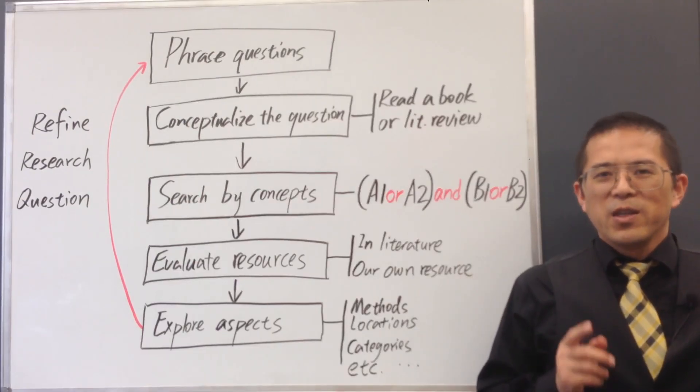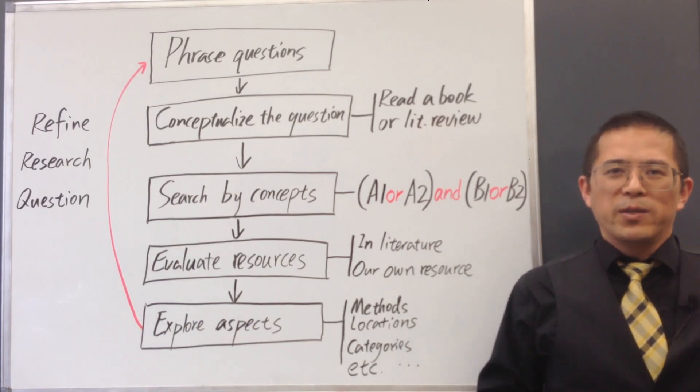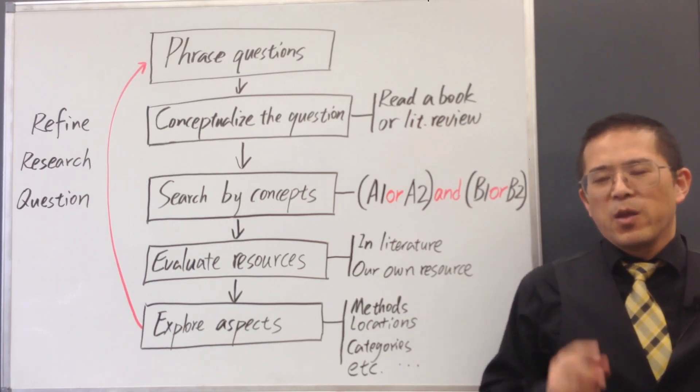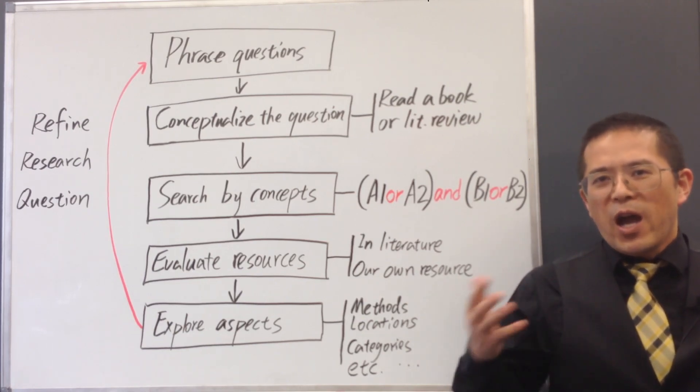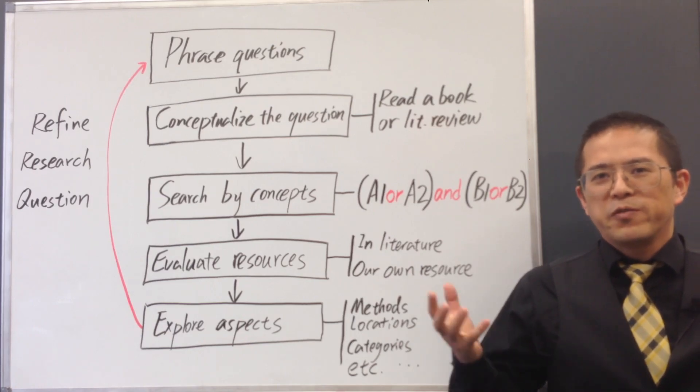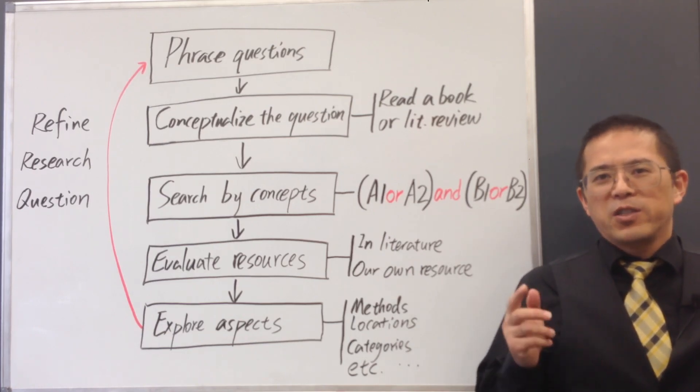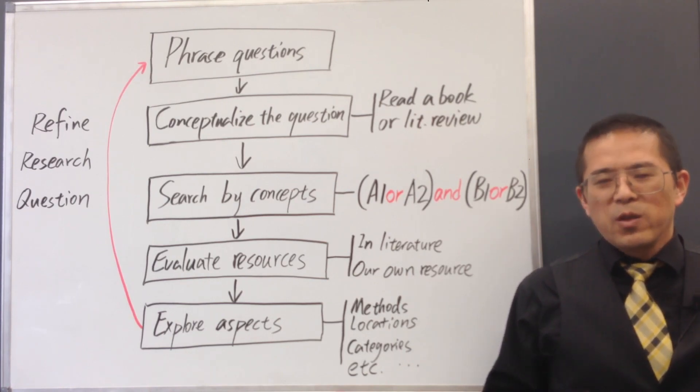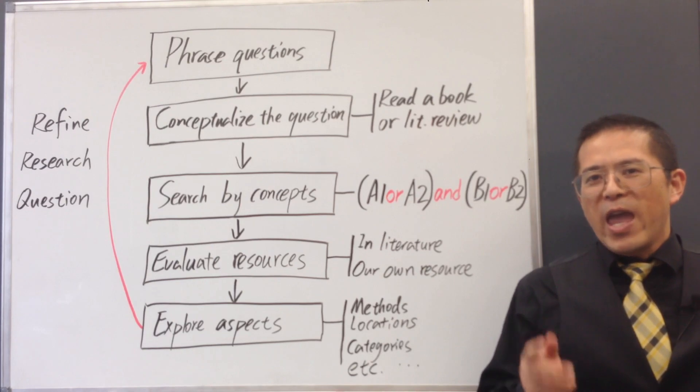The second reason is that if we choose a broader topic, we will have more competition from other researchers. It is more likely we may either repeat other people's efforts or contradict with other people's findings. As Arthur Shallow said, to do successful research, we do not need to know everything.